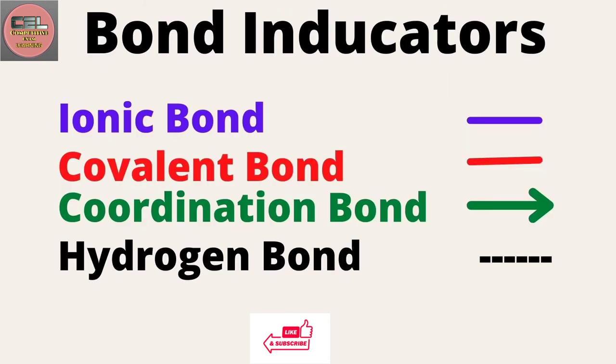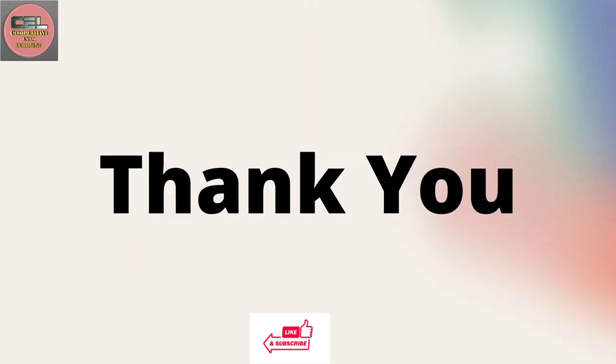Ionic bonds and covalent bonds are denoted by a simple line like a dash, while a coordination bond is denoted by an arrow and a hydrogen bond is denoted by a dotted line. Thank you.